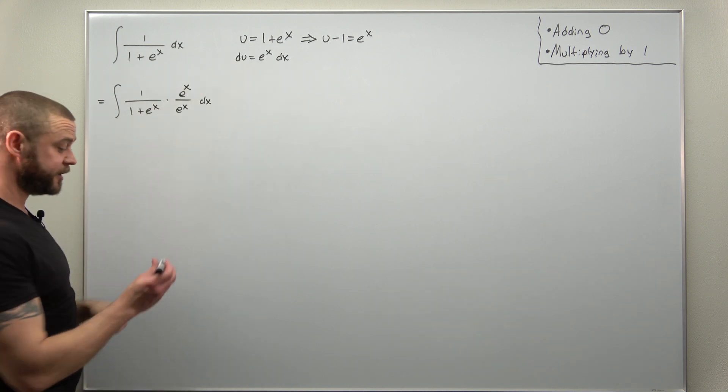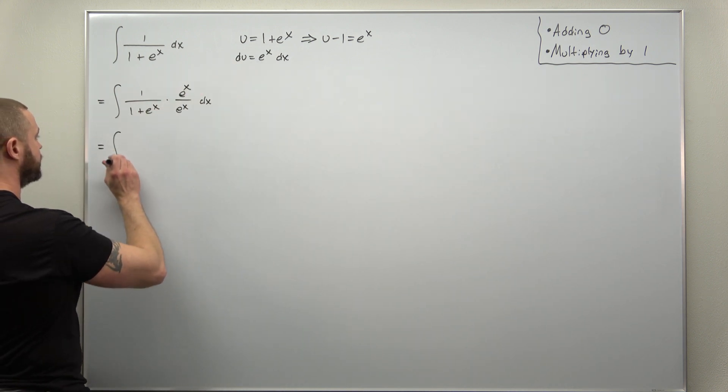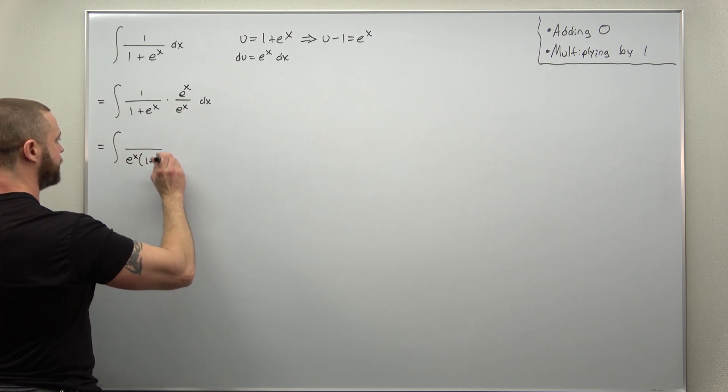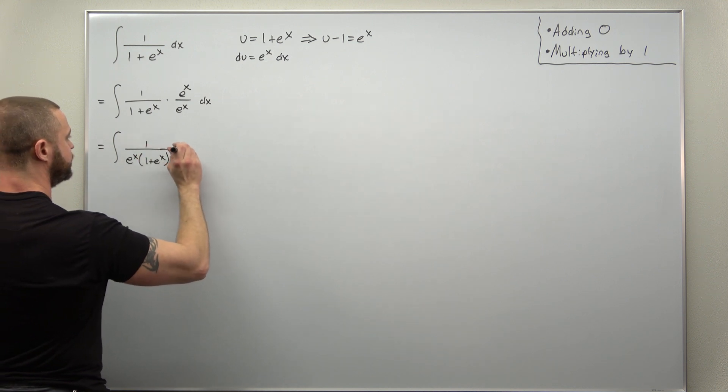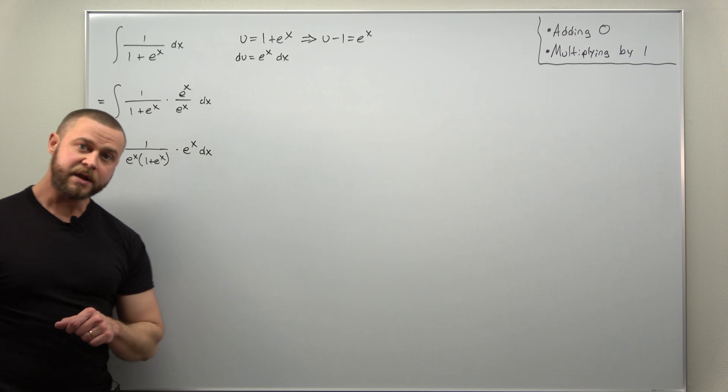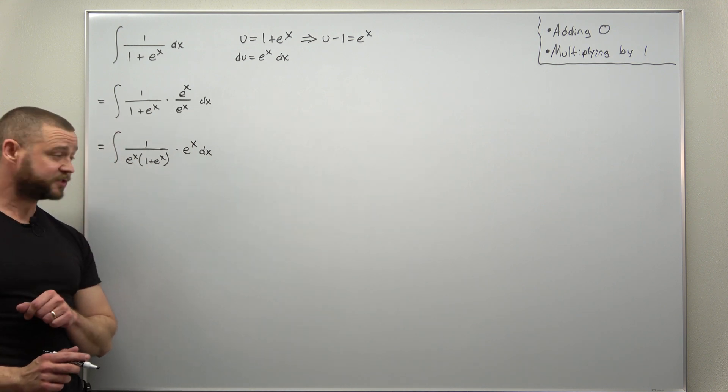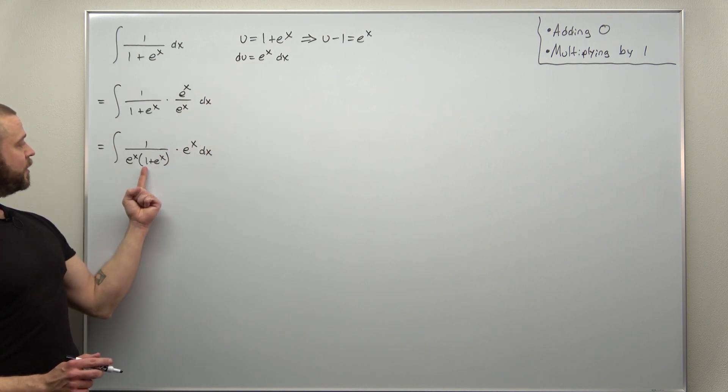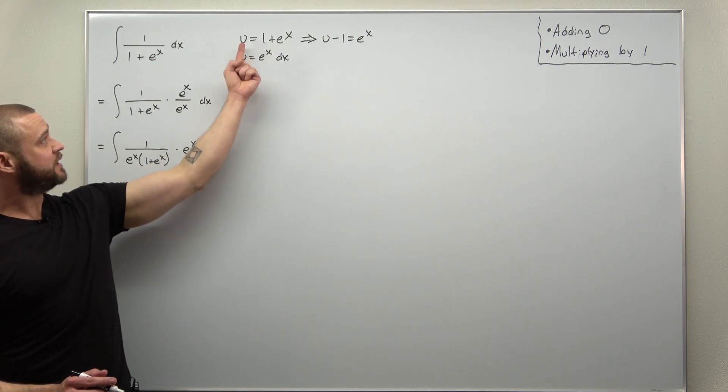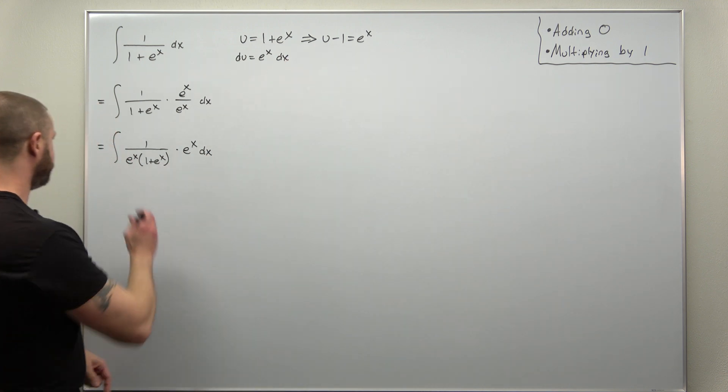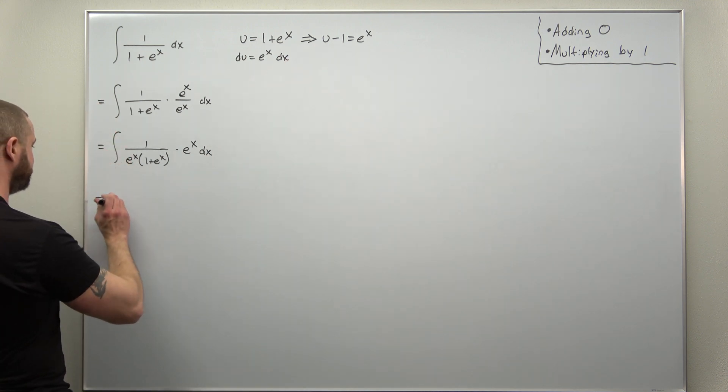I'm going to put this e to the x from the denominator in front. And now if we make use of our substitutions, we have e to the x dx that becomes du, 1 plus e to the x is u, but e to the x is u minus one. So if we convert this to u, or convert from x to u, we have one over now u minus one times u.